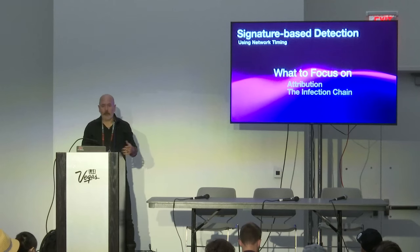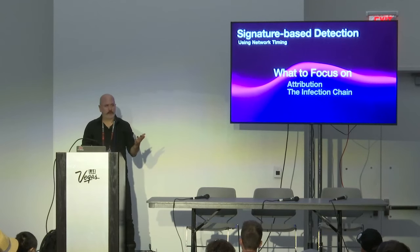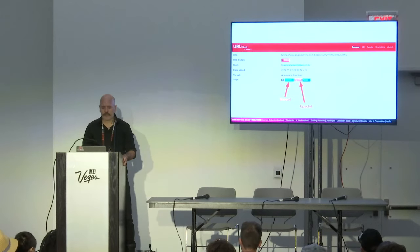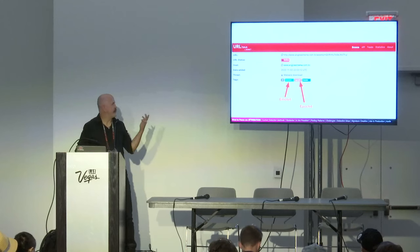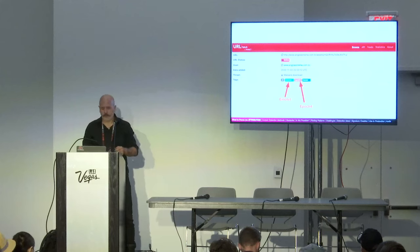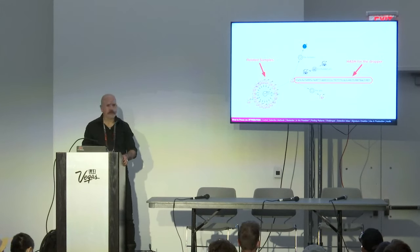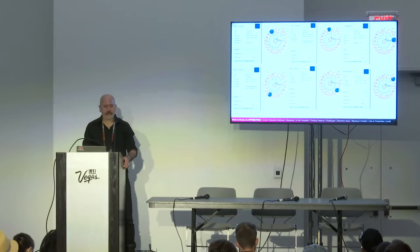Before I get into all the details, I'm going to talk about what I want to focus on - attribution and the infection chain. Looking at attribution, I spent most of my time as a threat hunter. When you're looking for something, you're following one thing that you see. So maybe I found a domain or a URL - in this case, I found one at urlhaus.abuse.ch, and then I can see it's part of Emotet, part of Epoch 4.